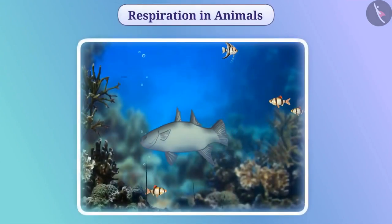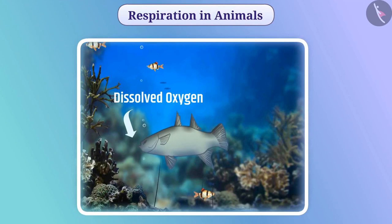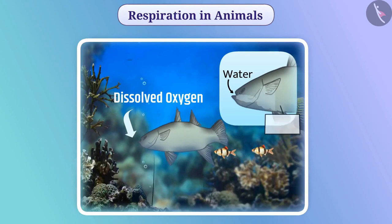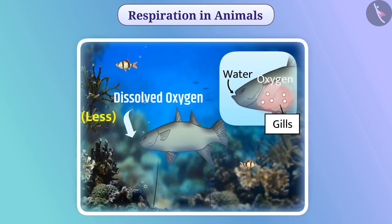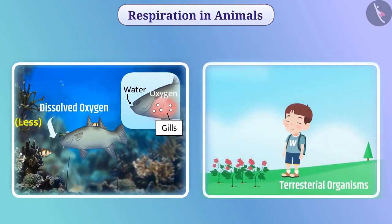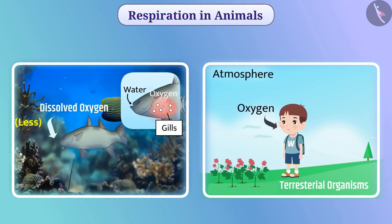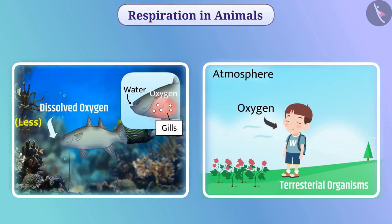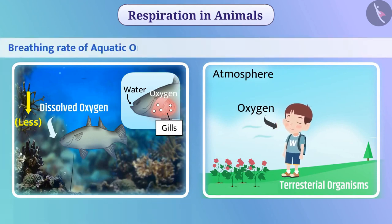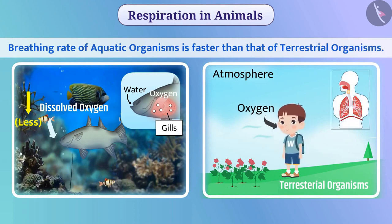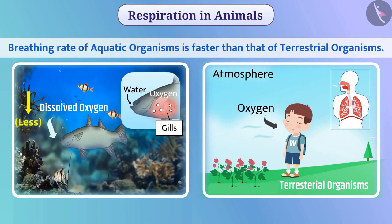Organisms living in water obtain oxygen dissolved in water. Fish take water inside the body from the mouth and forcefully send it to pass through the gills, where blood absorbs the oxygen dissolved in water. Terrestrial organisms receive oxygen from the atmosphere. The amount of soluble oxygen present in water is less than that of the atmosphere, so the breathing rate of aquatic organisms is faster than that of terrestrial organisms.